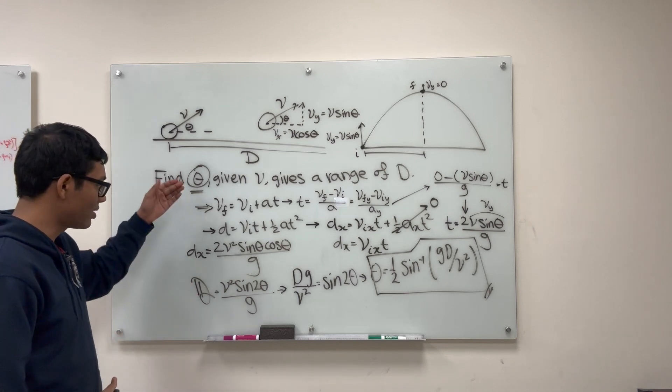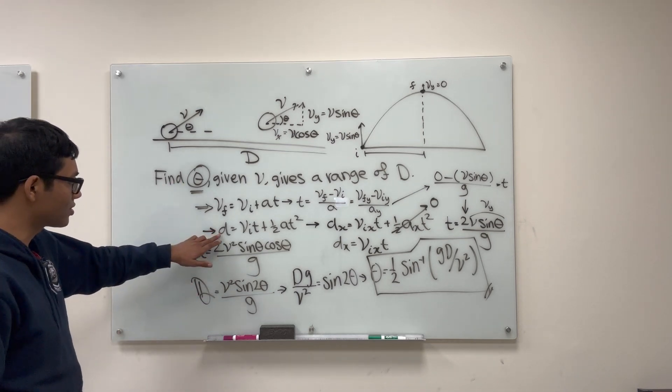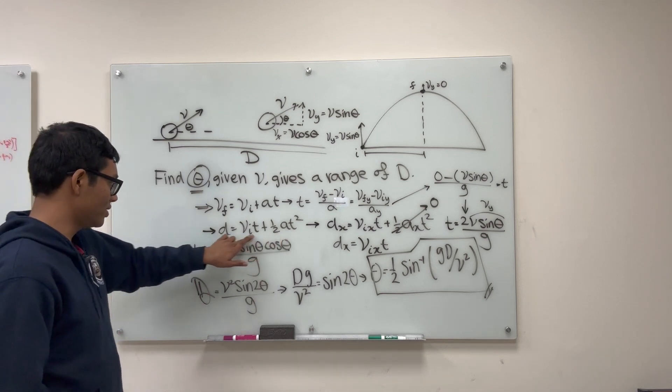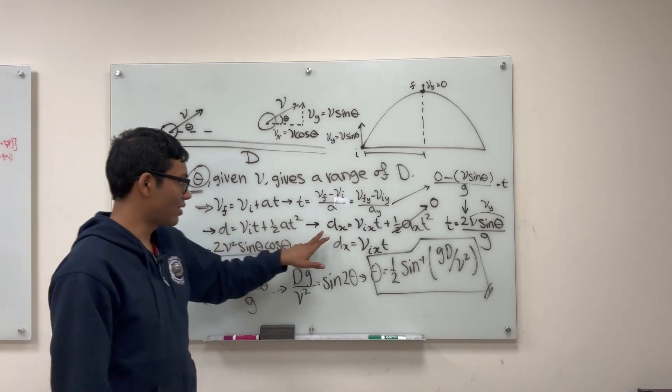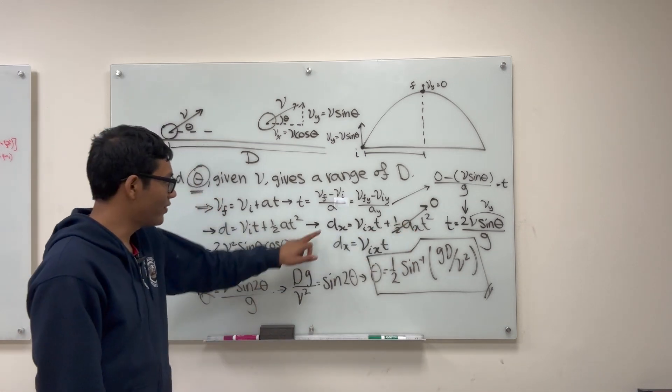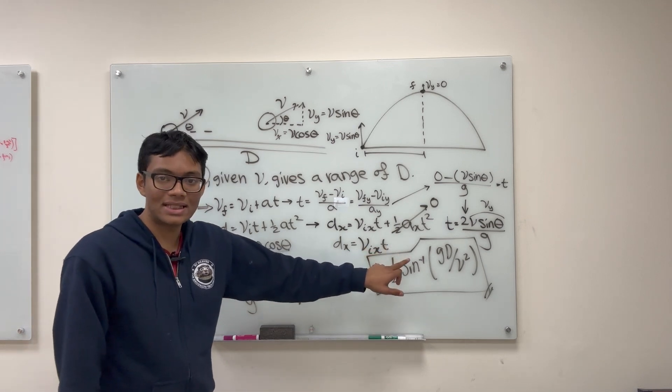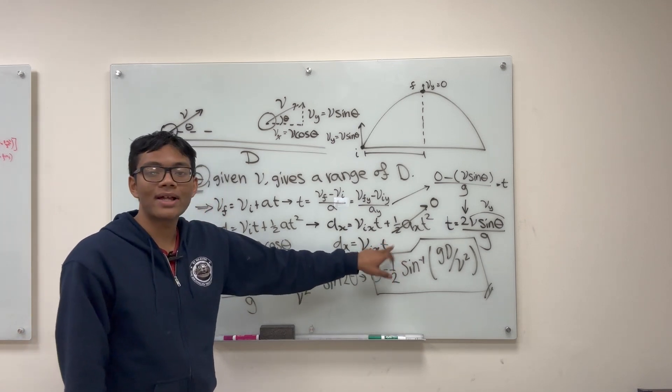So the first thing I did was I wrote down the four kinematics equations. And then I focused on the horizontal range equation, this equation. And I just wrote this equation down in the x direction, meaning it has no acceleration term here. So if I write down the range equation, then I have dx is vi x times t.